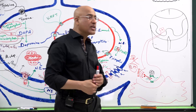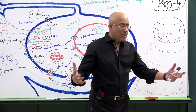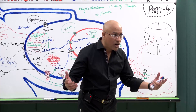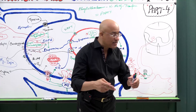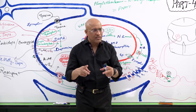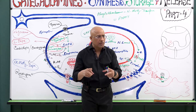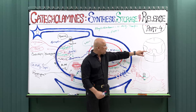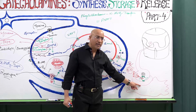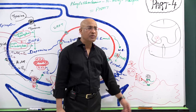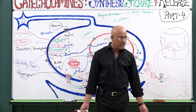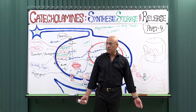At cholinergic nerve endings, botulinum toxin enters and performs proteolysis — destruction and catabolism — of SNARE proteins. Once these proteins are destroyed, vesicles cannot release their content. The result is failure of neurotransmission at neuromuscular junctions, and the muscles become flaccid and paralyzed.